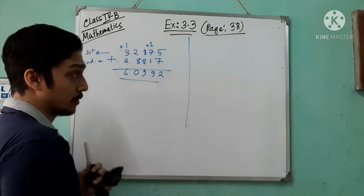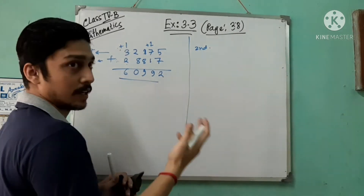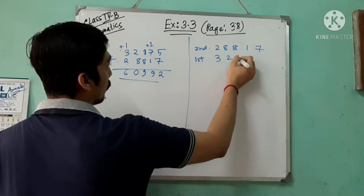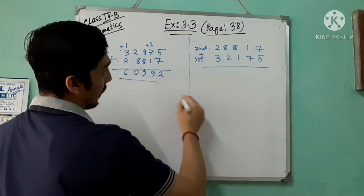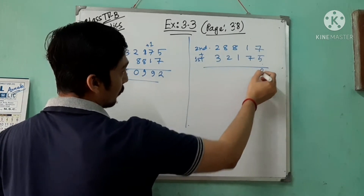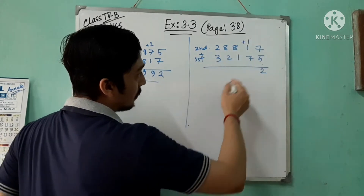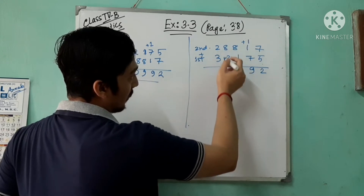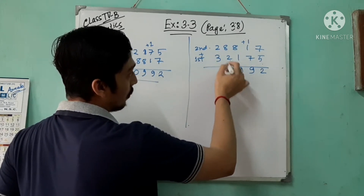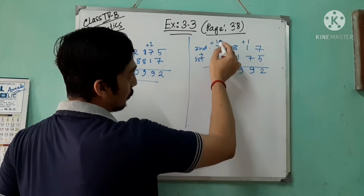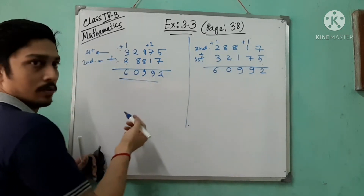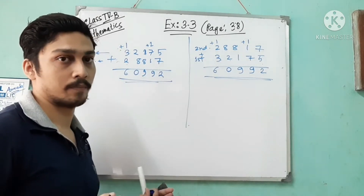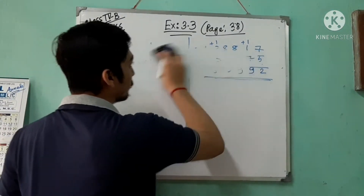Now if the order is changed — that means you write the second number first, then the first number — so 28,817 plus 32,175. Seven plus five is twelve, write one, carry one. Five plus seven is twelve, eight plus one is nine, one plus eight is nine. Two plus eight is ten, write zero, carry one. Three plus two is five, five plus one is six. Both sums are the same — so if the order is changed, the sum remains the same. This is property number one.